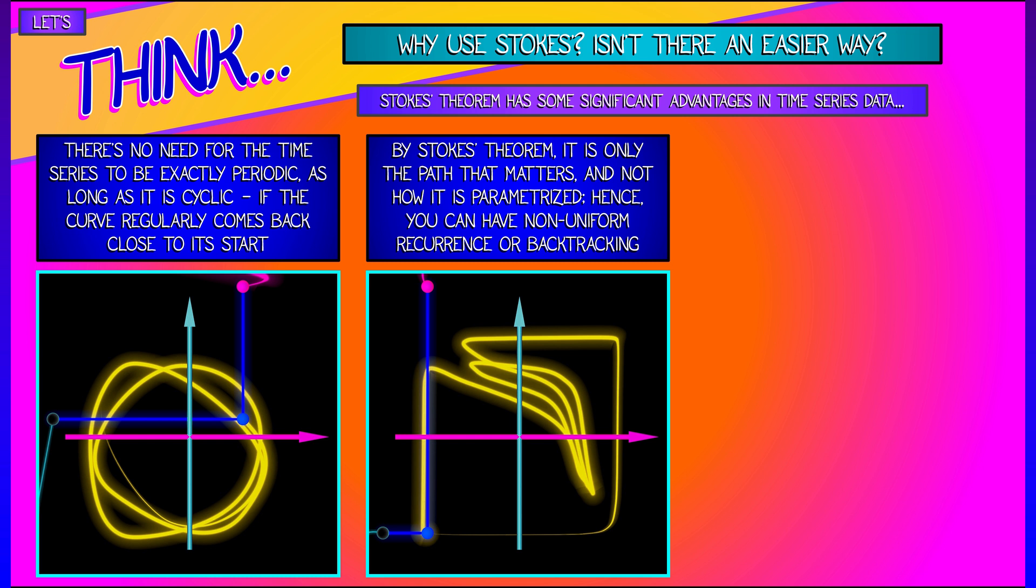Think about something like, oh, the business cycle in economics, right? Things go up, and then they come down, and then they go up, and then they come down. But this does not happen at regular time intervals. It is cyclic data without necessarily being periodic data. That's fine. That just changes the parametrization of the path, and we know from the change of variable theorem, boom, we are good to go there.